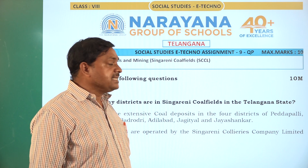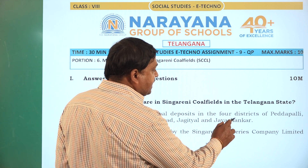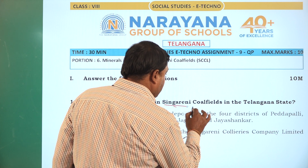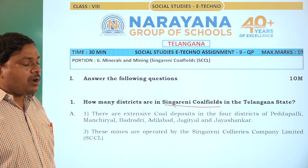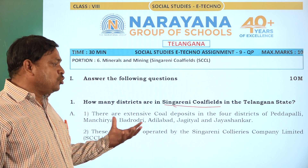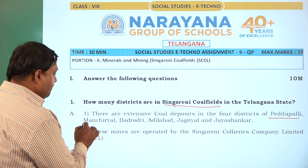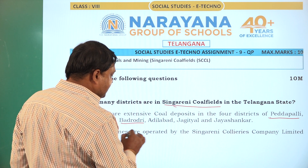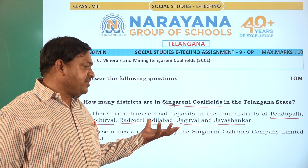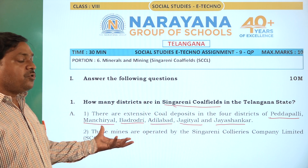That is called as SCCL. The first question is: how many districts are there in Singareni Coal Field in the Telangana state? In Telangana state, most of the coal fields are on the bank of river Godavari. The districts situated on the bank of river Godavari are Peddapalli, Manchiriyal, Badrathri, Adilabad, Jagityal, and Jaysekkar districts. A lot of coal deposits are situated on the bank of river Godavari.